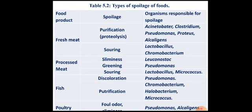These are different types of spoilage caused by different microorganisms. For fresh meat, putrefaction and proteolysis occur, with bacteria responsible being Acinetobacter, Clostridium, Pseudomonas, Proteus, and Alcaligenes. This table is given in your notes — the first column lists the type of product, the second lists the type of spoilage, and the third column describes the organisms responsible.